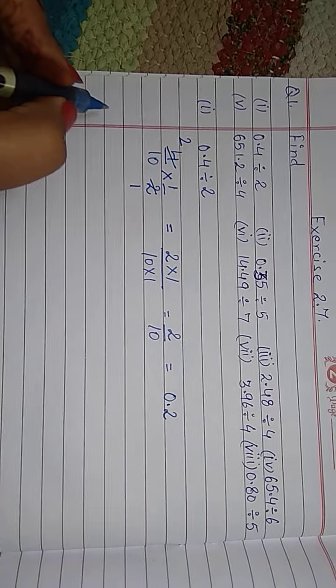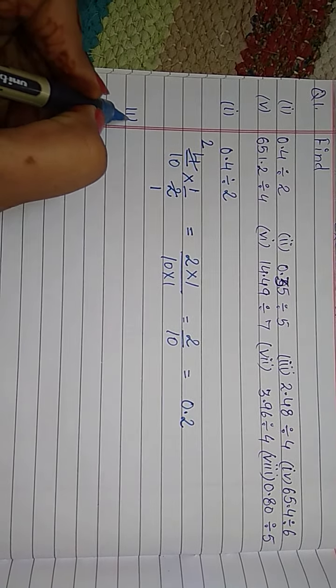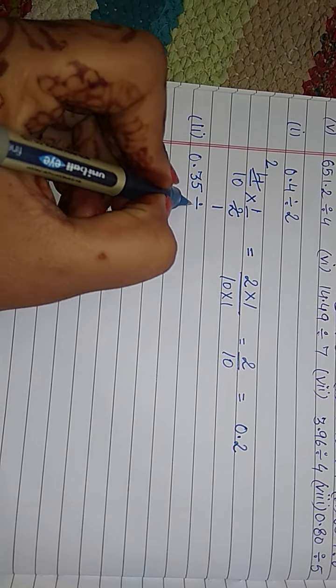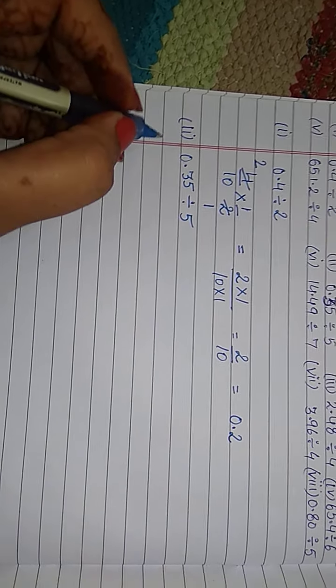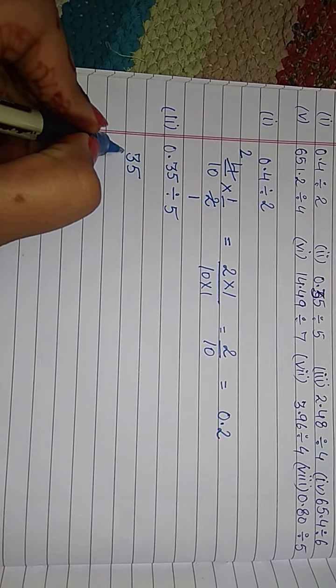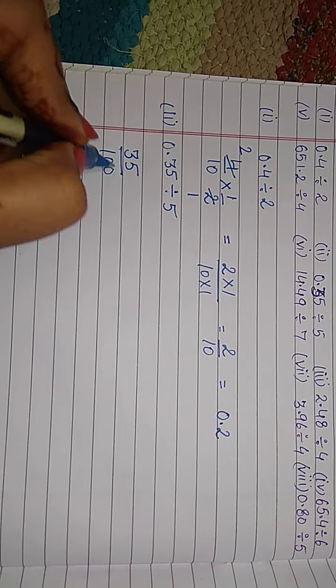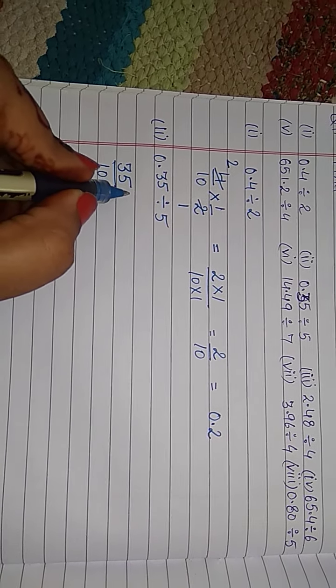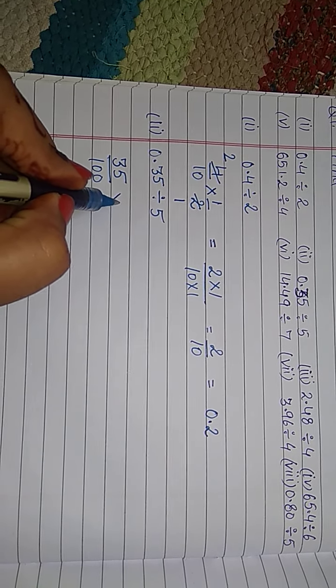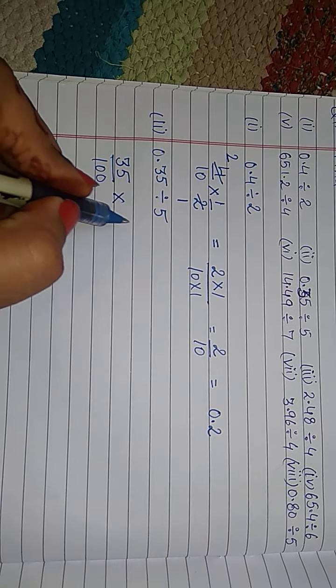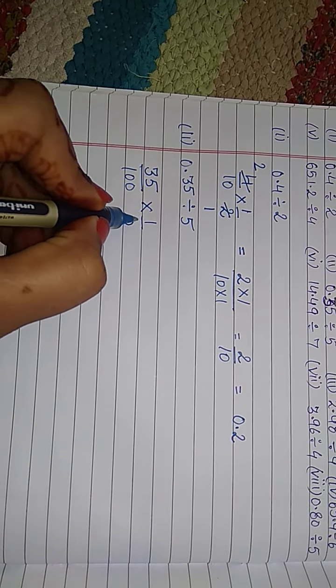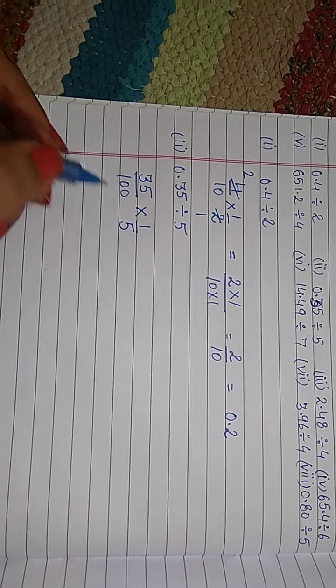Second is 0.35 divided by 5. First, convert into fraction form. 35 over 100. Because after decimal, 2 digits are there. And division sign changes to multiplication. Take reciprocal of 5. 5 reciprocal is 1 by 5. Now, if diagonal cut to each other, you can cut.